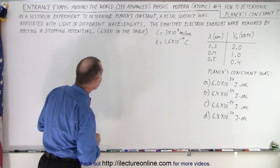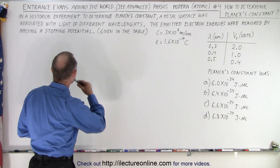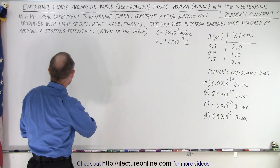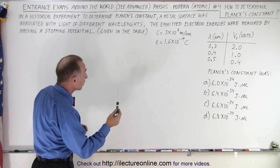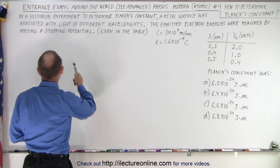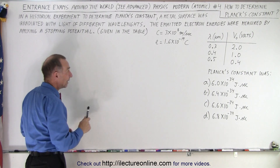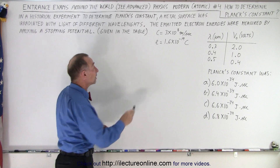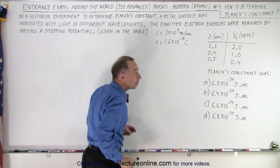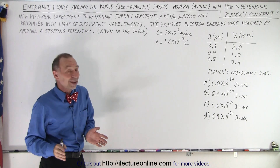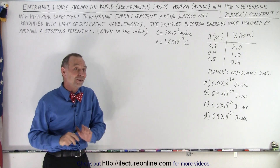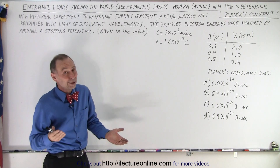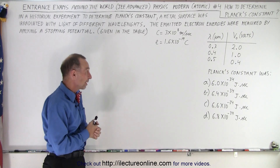In this historical experiment to determine Planck's constant, a metal surface was irradiated with light of different wavelengths. The emitted electron energies were measured by applying a stopping potential, and that's all given in a table. They also give you the speed of light and the charge of a single electron — normally they don't give many constants on the JEE test, but almost everybody probably memorizes those already.